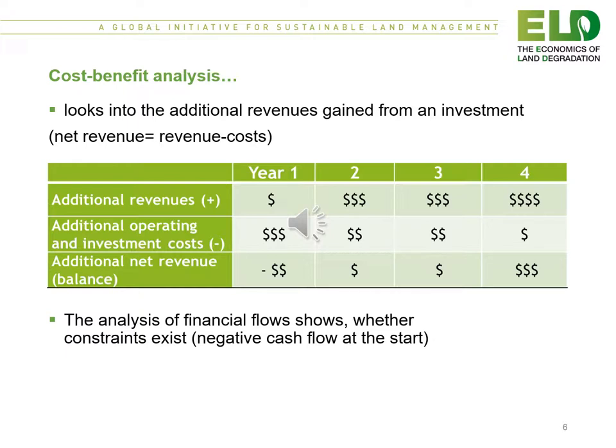Another way of looking at this information is to lay out a table which looks into the additional revenues gained from an investment. We see that the additional revenues might be small or even negative at the beginning. You will have additional operational and investment costs, so the net revenue may indeed be negative for the first few years. The analysis of the financial flows shows whether constraints exist — in other words, what is the negative cash flow at the start?